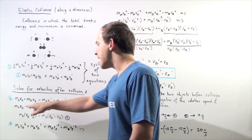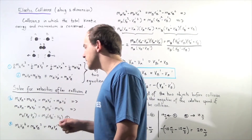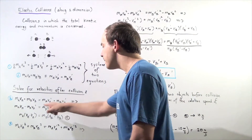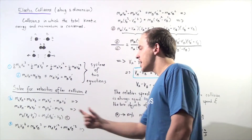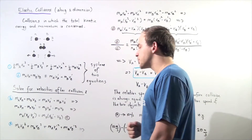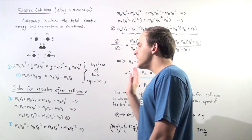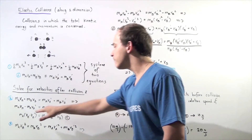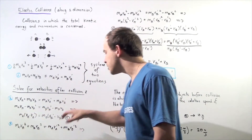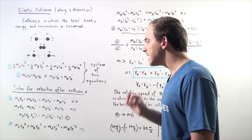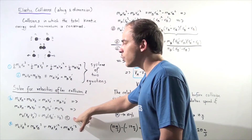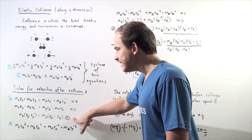Notice that MA appears in two terms and MB appears in two terms, so we can factor them out. We get the following equation, which we'll label equation C.